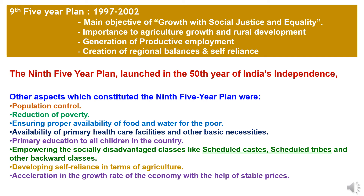The Ninth Five-Year Plan was implemented in 1997 and continued till 2002. The main objectives were growth with social justice and equality, importance to agriculture growth and rural development, generation of productive employment, and creation of regional balances and self-reliance. The Ninth Five-Year Plan was launched in the 50th year of India's independence. Other aspects constituted in this plan were population control, reduction of poverty, ensuring proper availability of food and water for the poor, availability of primary healthcare facilities and other basic necessities, primary education for all children, empowering socially disadvantaged classes like Scheduled Castes, Scheduled Tribes, and Other Backward Classes, and developing self-reliance in agriculture with acceleration in the growth rate of the economy with the help of stable prices.